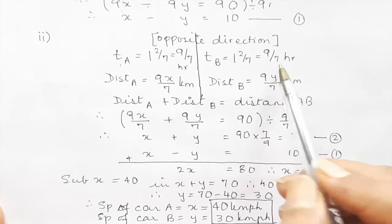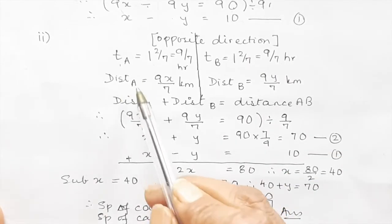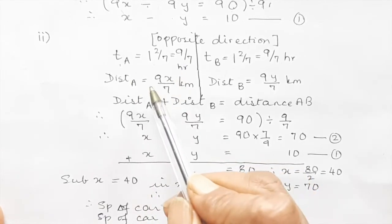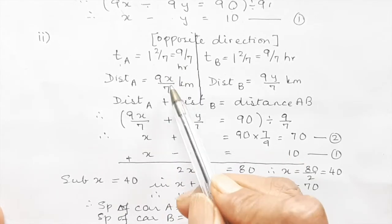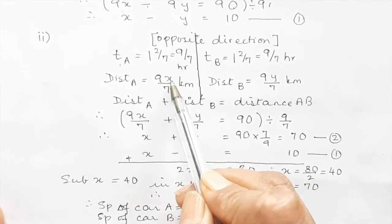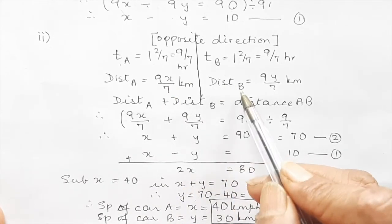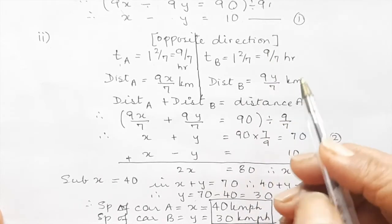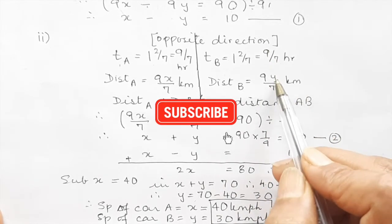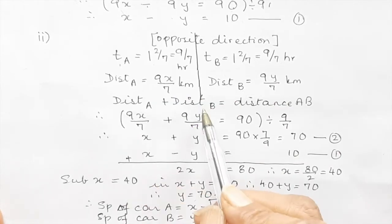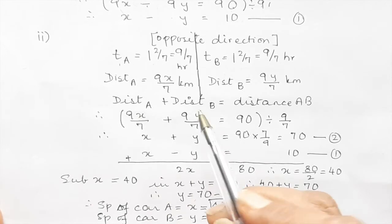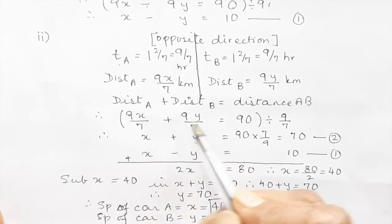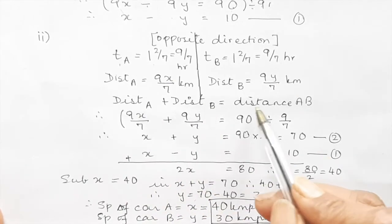The speed of A remains x, so distance equals speed into time: 9/7 multiplied by x gives 9x/7. The distance for the car from B is 9/7 multiplied by y, giving 9y/7 kilometers. As explained, both distances together equal the distance AB.